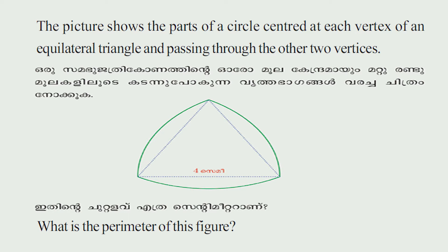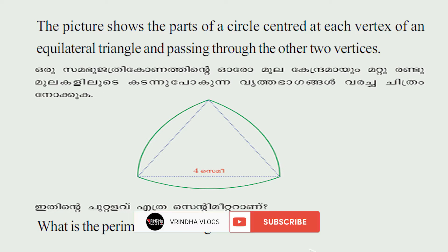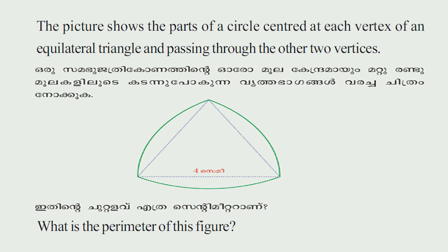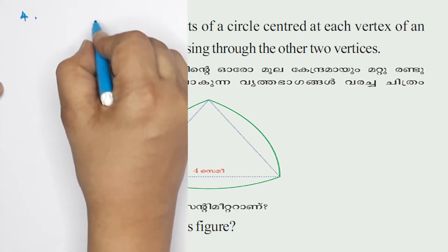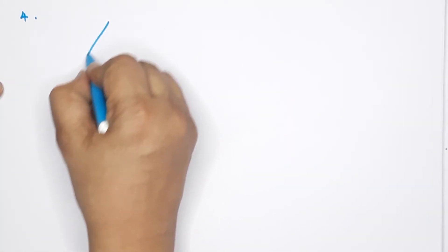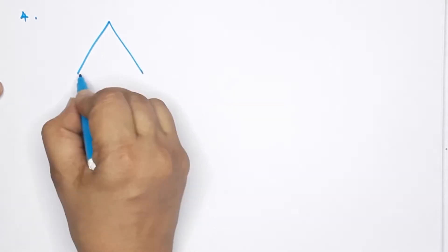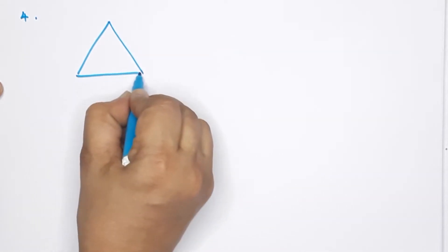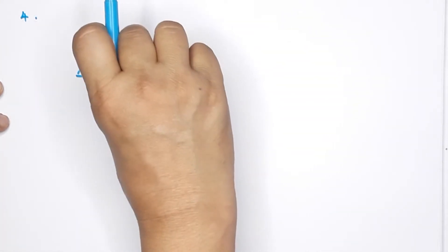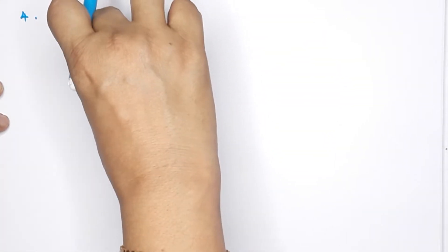In the fourth problem, the picture shows parts of a circle centered at each vertex of an equilateral triangle and passing through the other two vertices. What is the perimeter of this figure? In this triangle, we put a triangle and the side of that equals the radius — this triangle is equal to this radius.